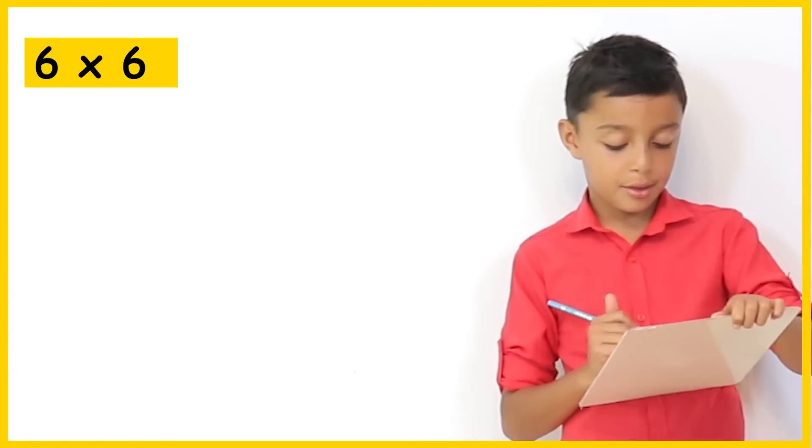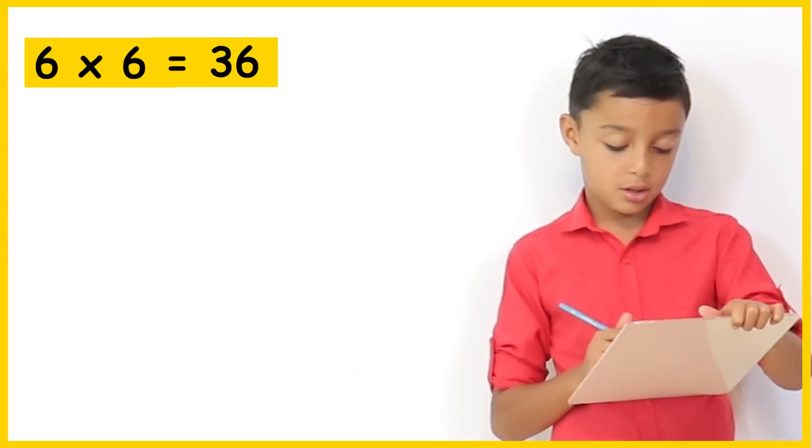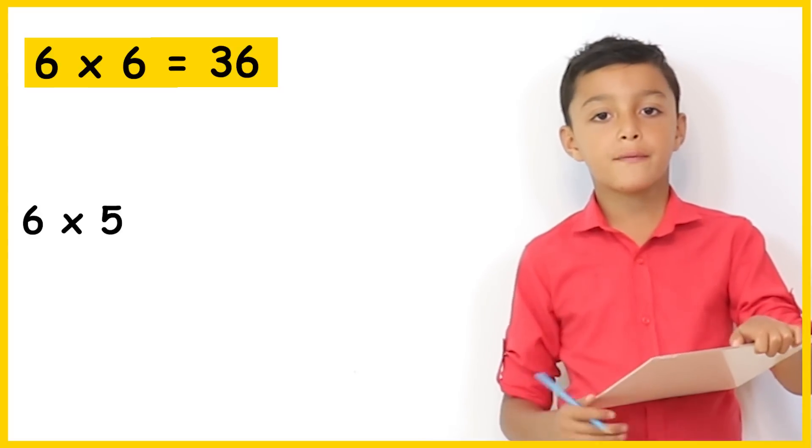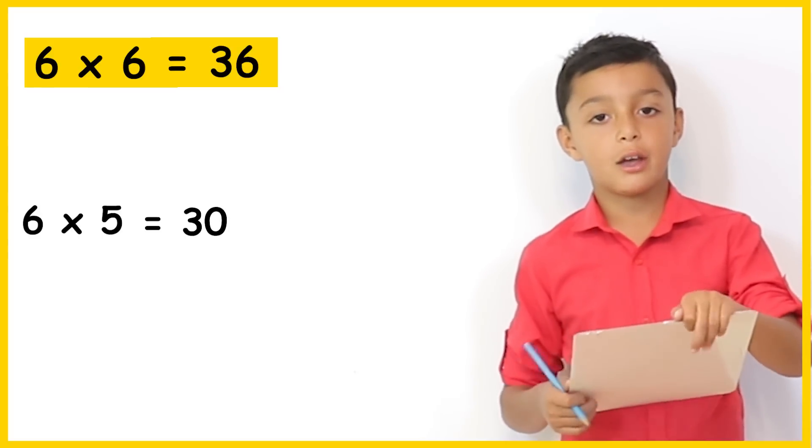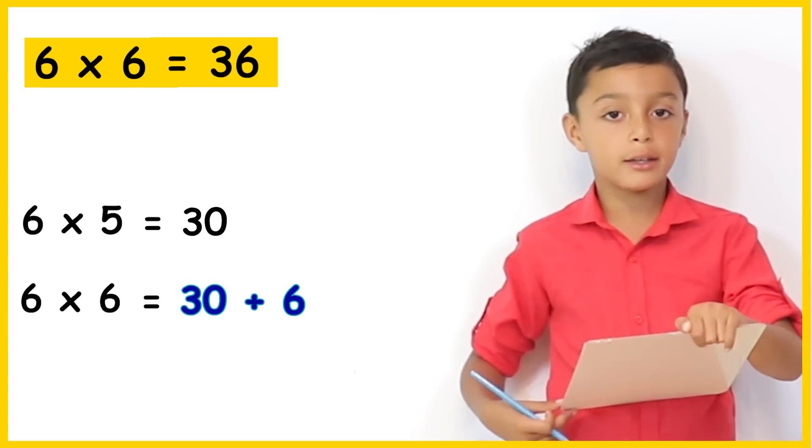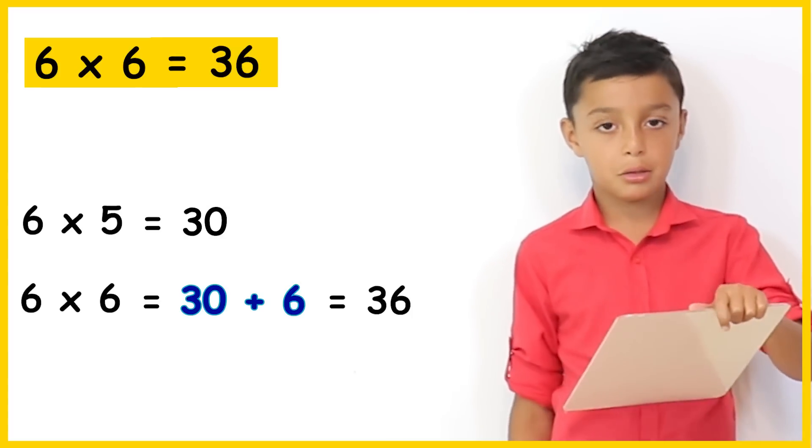What about 6 times 6? 6 times 6 is 36. So we do 6 times 5 which is 30 and then add 6 which is 36. Brilliant Niall.